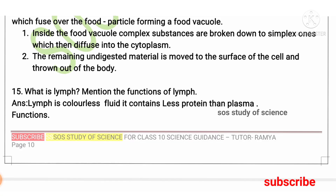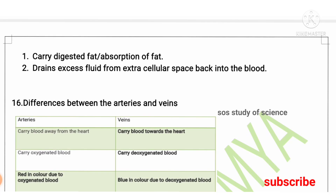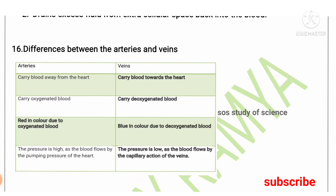Next: what is lymph? Lymph is a colorless fluid containing less protein than plasma. Its functions include carrying and absorbing digested fat, and draining excess fluid from extracellular spaces back into the blood. It is also important to know the difference between arteries and veins: arteries carry blood away from the heart to different parts of the body, while veins carry blood towards the heart. Arteries carry oxygenated blood; veins carry deoxygenated blood.